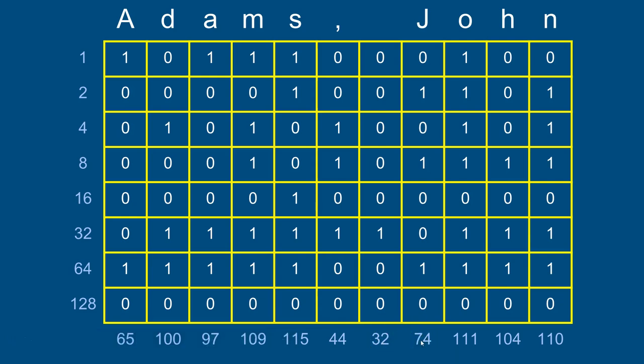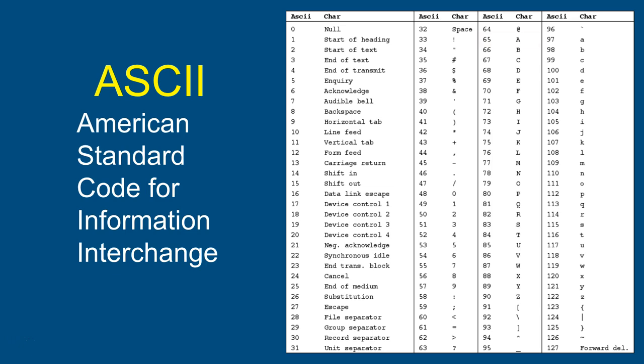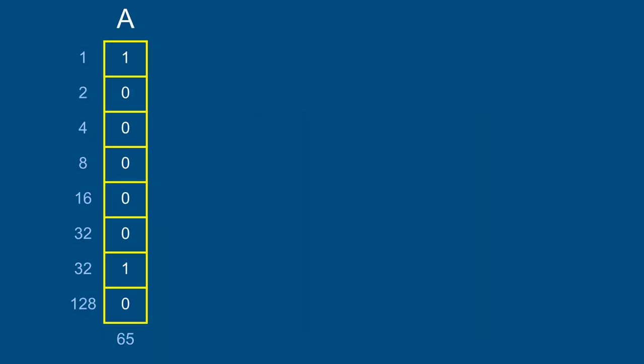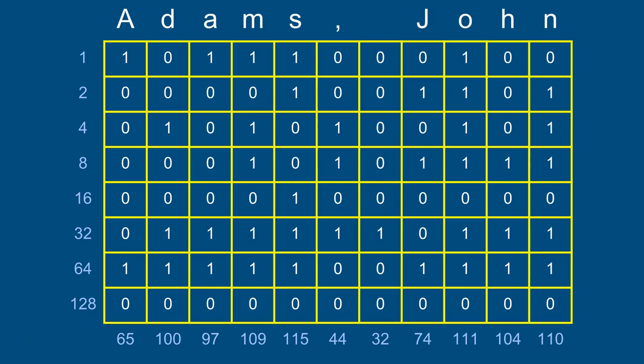The data type is called String, and it's different from all previous types because it's a variable-length data type. When you declare a String variable, it allocates memory depending on what you store - one byte per character. A small string takes a few bytes; a long string takes more. All other types we've seen are fixed-length: once declared, they always use that amount of memory.